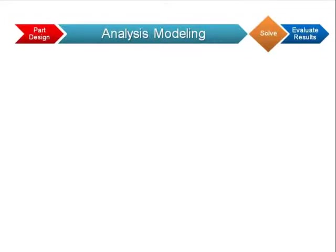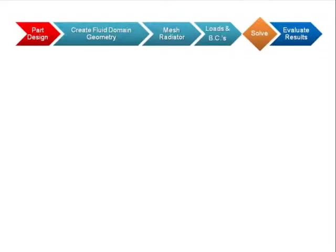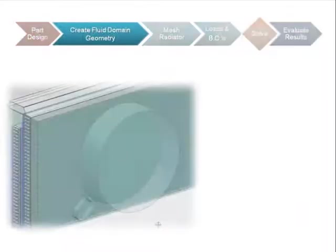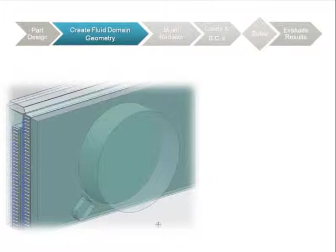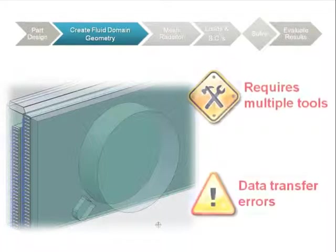Engineers face three main challenges to building their radiator analysis models under traditional processes. The first challenge is working with the initial design data and developing the geometry that represents the air flowing around and through the radiator, known as the fluid domain. Typical CAE tools don't have the geometry capabilities necessary to do this step efficiently. Instead, engineers often use multiple tools to create the fluid domain, which can then lead to data transfer errors.